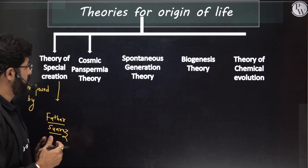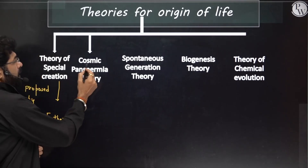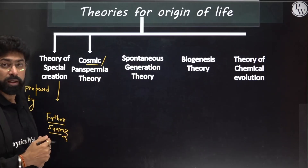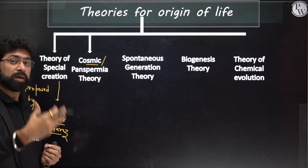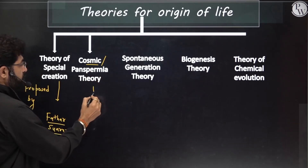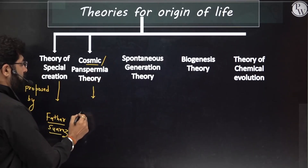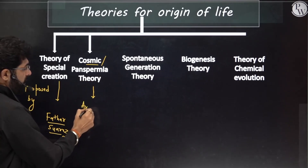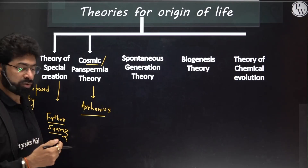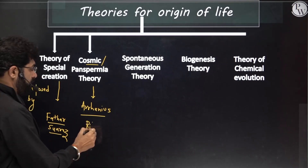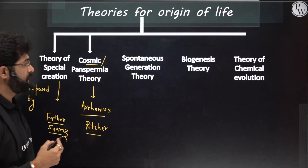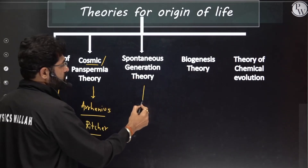Next comes the Cosmic Theory or Panspermia theory, which says life came from outer space in the form of spores. This was proposed by Arrhenius and Richter. Then there is Spontaneous Generation theory proposed by Aristotle and Van Helmont. Biogenesis theory was also discussed, and finally the theory of Chemical Evolution given by Oparin and Haldane.